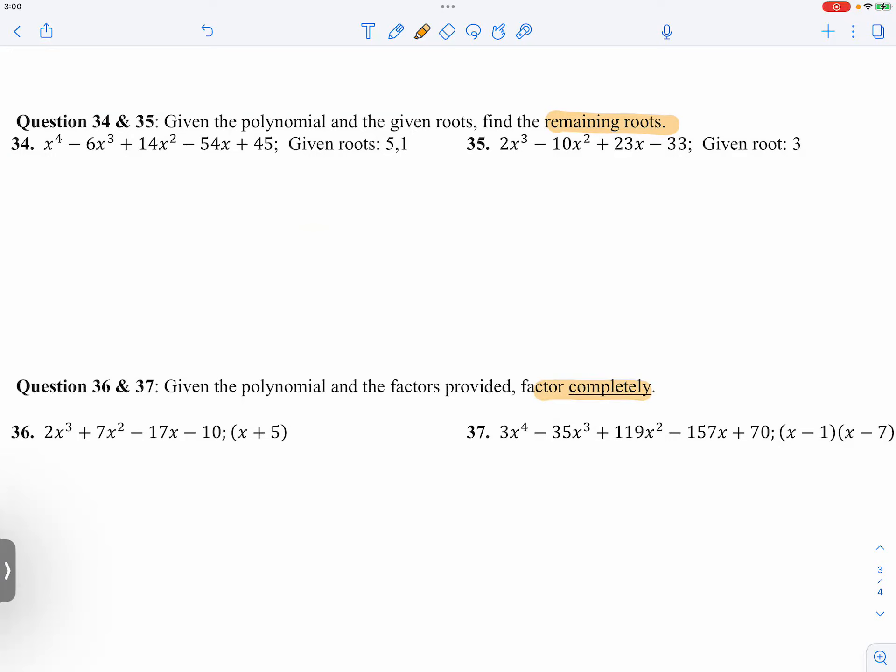The confusion for some students is that because we use synthetic division for both tasks, people might confuse what they are trying to present at the end. So for the first two questions, 34 and 35, we're trying to find the remaining roots. And for the bottom one, we are trying to factor it completely.